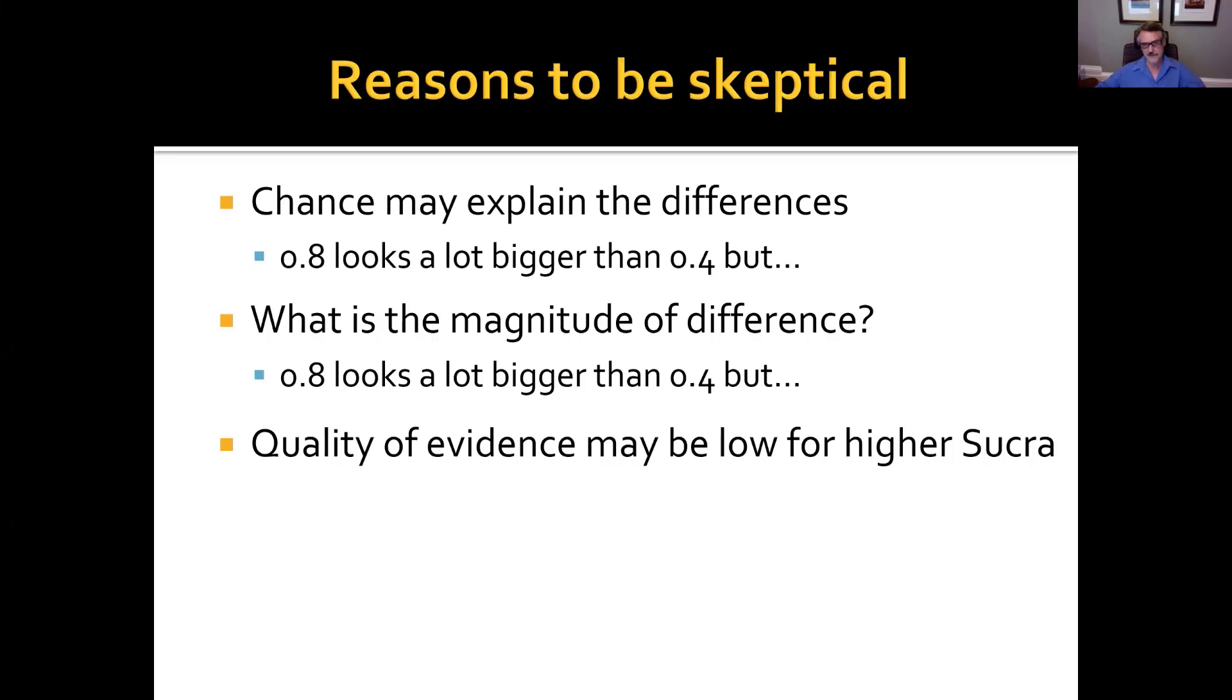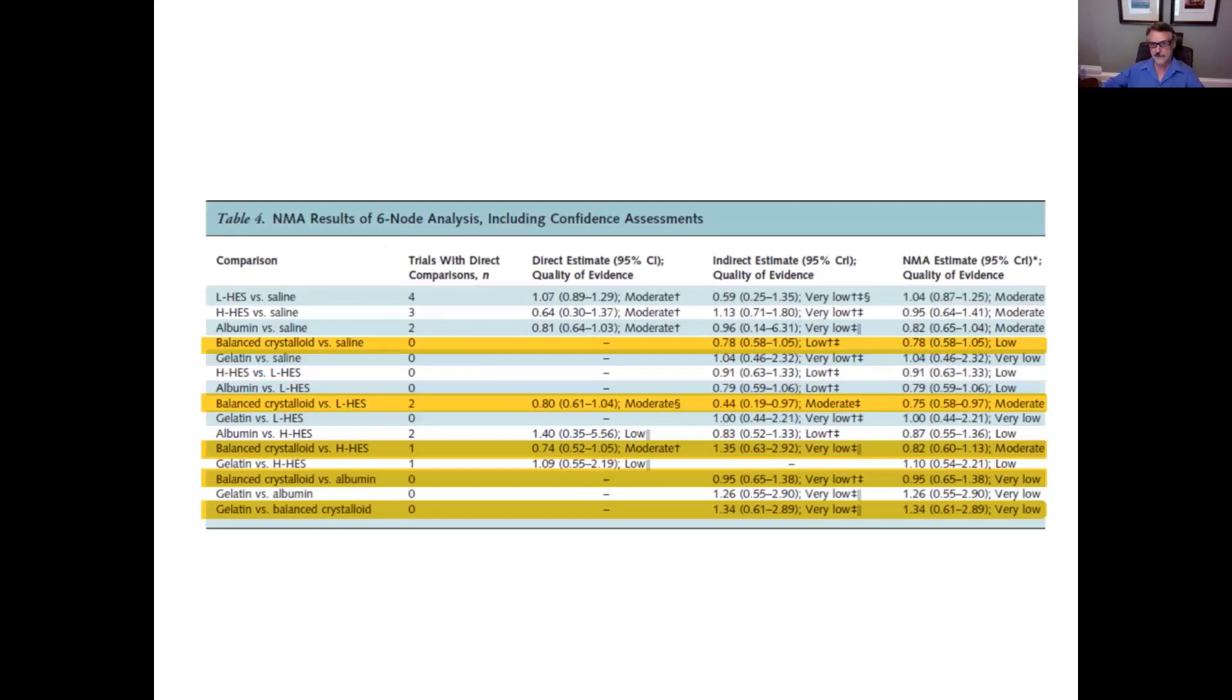Something that looks good in SUCRA is not so good when you look at the quality of the evidence. And you remember, balanced crystalloid looks like the best. But in terms of saline, it's only low certainty evidence. Moderate relative to balanced crystalloid with a confidence interval that just borders on no effect. Moderate for balanced crystalloid for hydroxyethyl starches, but a confidence interval that considerably overlaps no effect and against albumin or gelatin, very low certainty of evidence. So you can see there that if we were to say, OK, let's use balanced crystalloid, well, maybe, but it remains, when you look at the certainty of the evidence, it remains very uncertain whether we should be using balanced crystalloid. So there are these three problems with SUCRA, of which perhaps the most serious is that it ignores the certainty of the evidence.